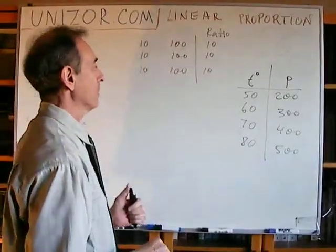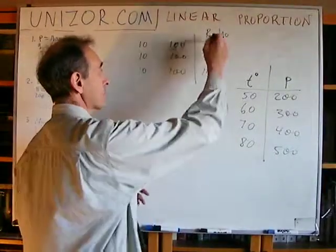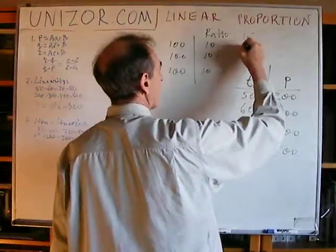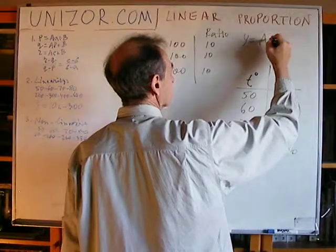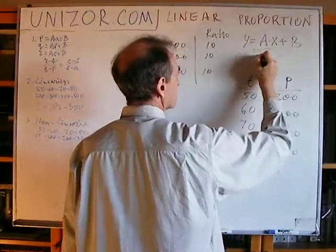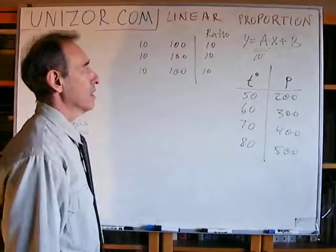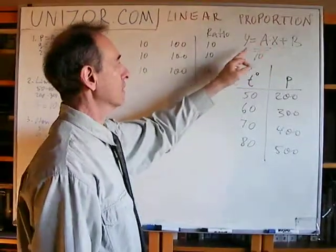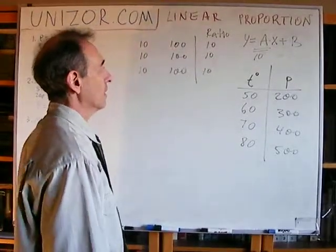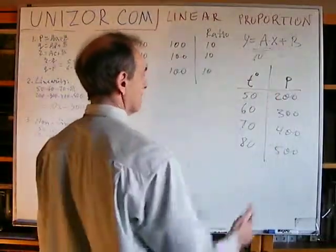Now, dependency is linear and this ratio is the slope. So, if I'm looking for y equals a times x plus b, a is 10. That's the slope. Because change of the argument results in the change of the function 10 times. So, the only thing which I don't have is b.